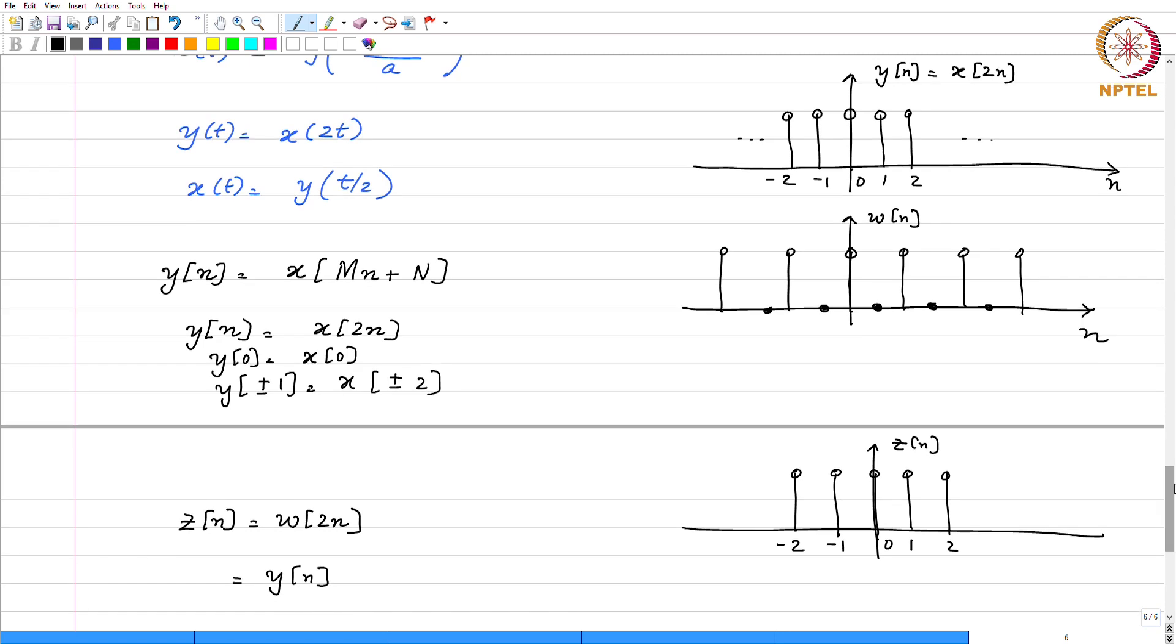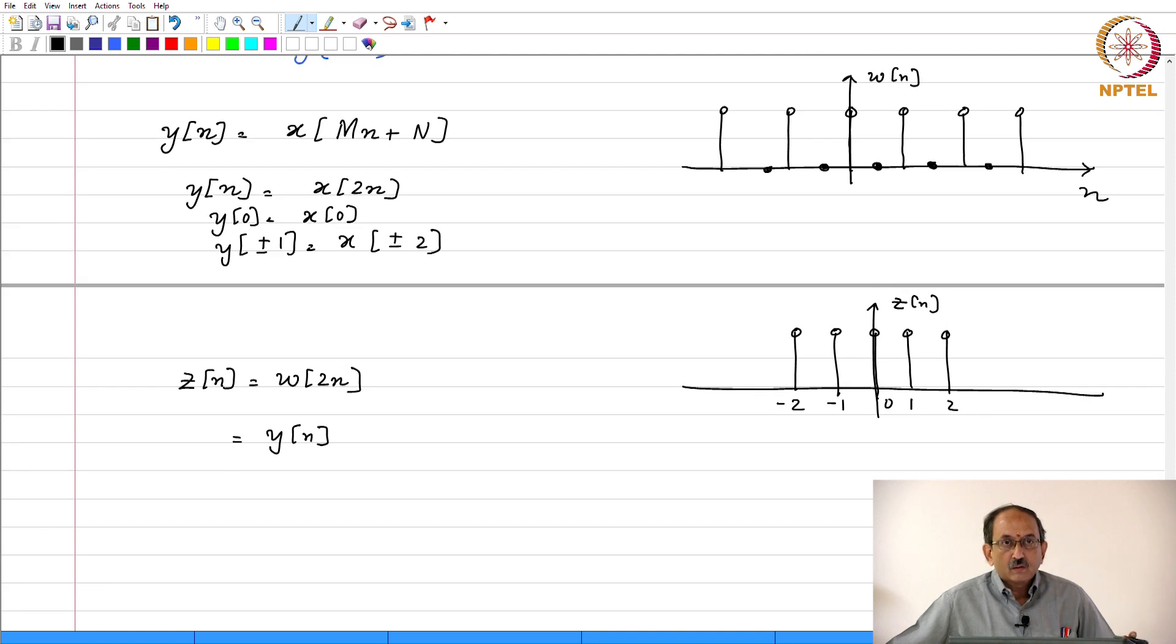And the consequence of this is that suppose you are given z(n), which is the same as y(n), you cannot tell whether the sequence that it came from was x(n) or w(n). So in sharp contrast with respect to the continuous time case, where given y(t) as x(2t) you can go back to x(t) by expansion by a factor of 2, whereas here you cannot. And the reason why this is happening is when you pick up all the even indices, you are simply discarding the odd indices. Once you have discarded the odd indices, there is no going back. Therefore, although this appears similar to compression in the continuous time case, there are important differences.